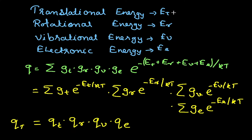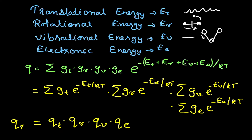Particles perform different types of motion, and different types of energies are associated with each. When a particle performs translational motion — moving randomly — the associated energy is translational energy. When particles perform rotational motion, such as a diatomic molecule rotating around its molecular axis, the energy is rotational energy. When particles vibrate, the associated energy is vibrational energy. There is also energy associated with electronic transitions and nuclear energy. Each type of energy is represented in the form of a corresponding partition function: translational energy gives translational partition function, rotational energy gives rotational partition function, vibrational energy gives vibrational partition function, and so on.